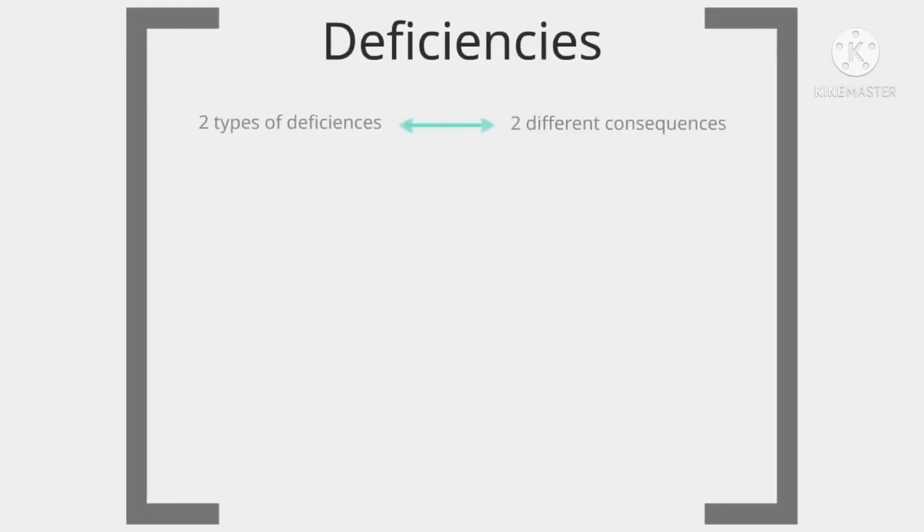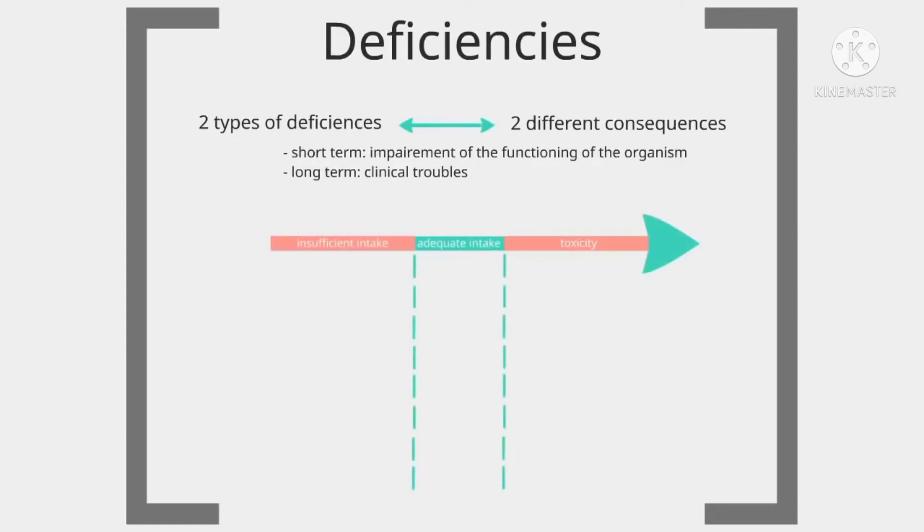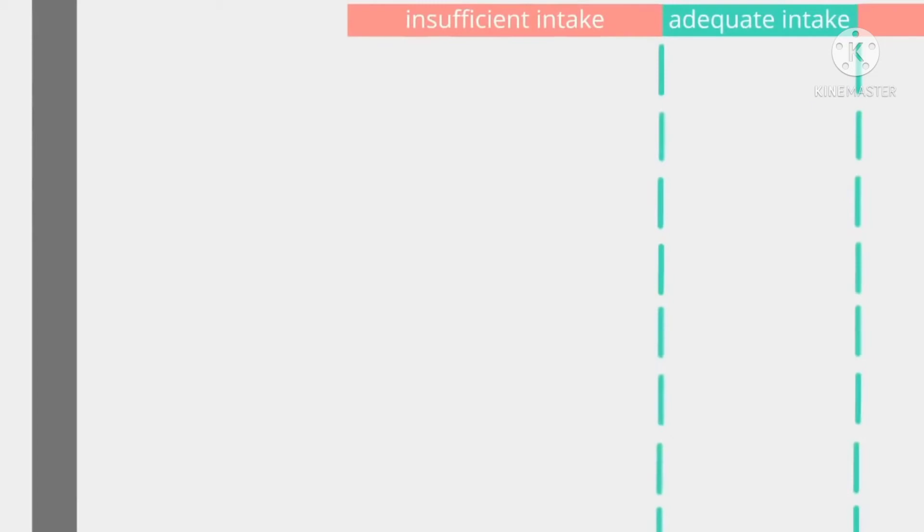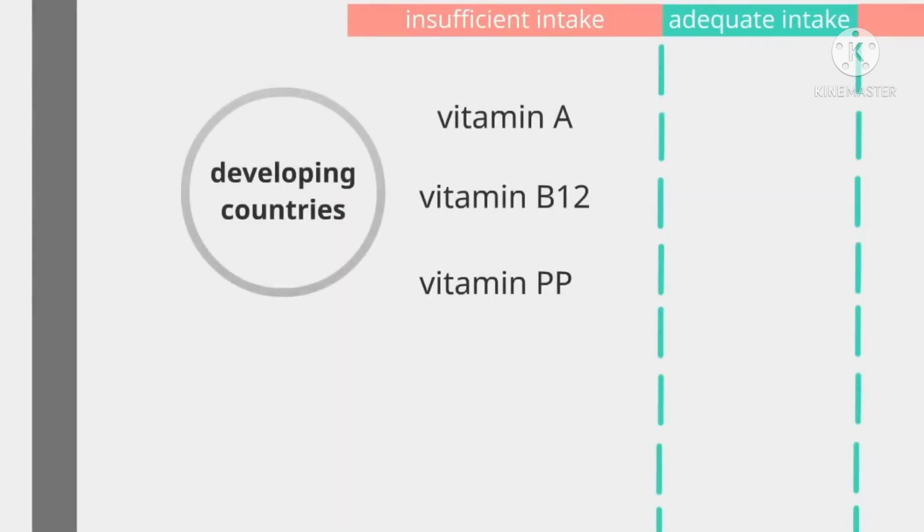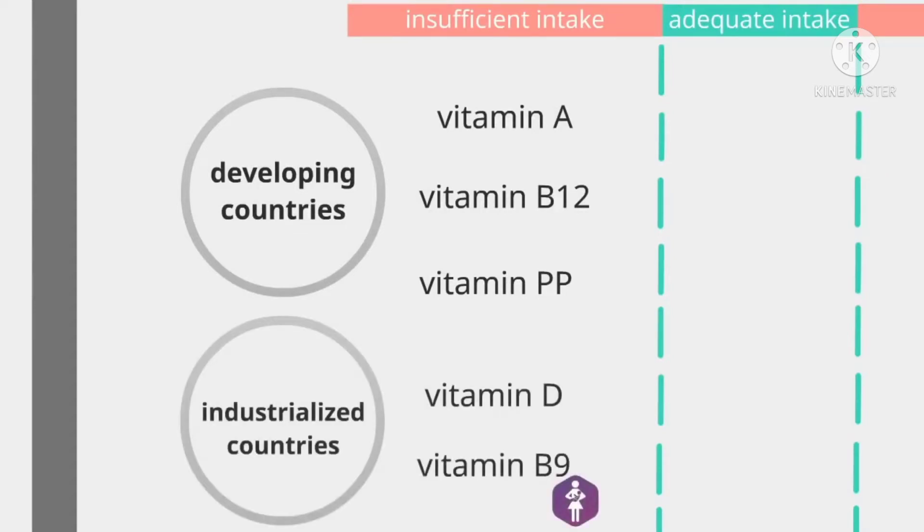An insufficient intake of micronutrients leads in the short-term to an impairment of the functioning of the organism. Long-term insufficient intakes can lead to clinical troubles. The most widely spread deficiencies in developing countries are of vitamins A, B12, and PP. Among industrialized countries, there are deficiencies in vitamin D and vitamin B9, which are particularly important for child-bearing women.